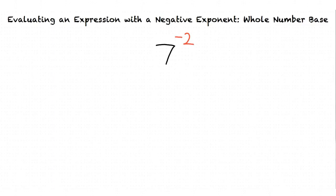How is evaluating an expression with a negative exponent any different than evaluating with a positive exponent? The main difference between a negative and positive exponent is that we need to make the negative exponent positive before we evaluate the expression.